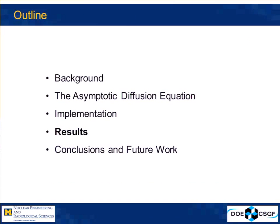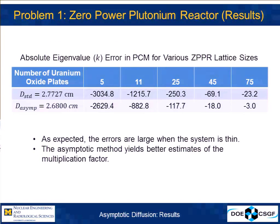Now some results. We have a 1D problem based on something Eli Galbard looked at when studying non-standard diffusion coefficients back in 1967, loosely based on the zero-powered plutonium reactor, an experimental reactor at Argonne West, now INL. The first thing we look at is the error in the reactor eigenvalue — the multiplication factor. Errors are shown in PCM, thousandths of a percent. For different size systems with different numbers of fuel plates, in every case the asymptotic diffusion coefficient gives a better estimate of the eigenvalue.